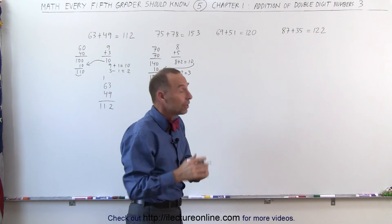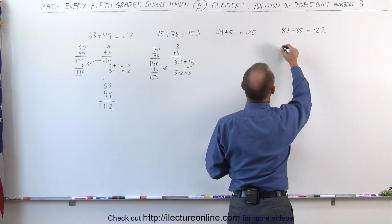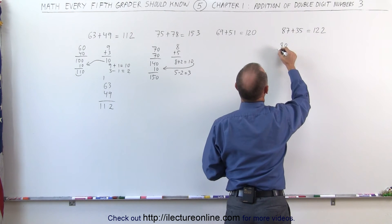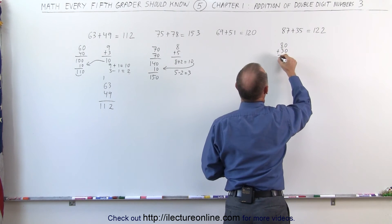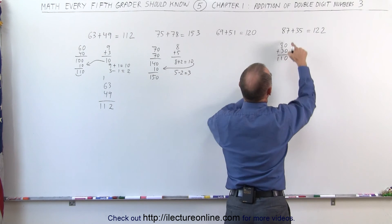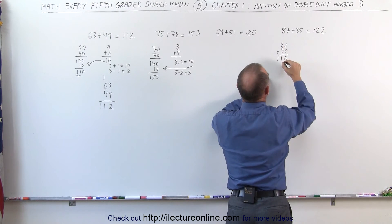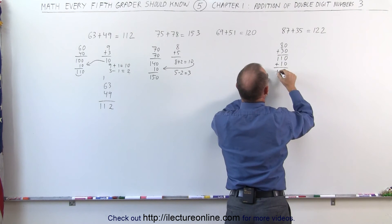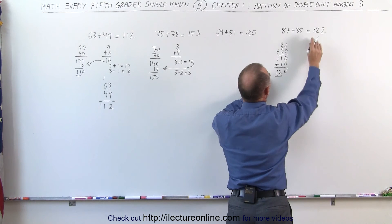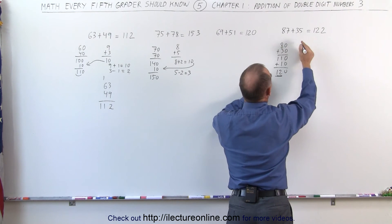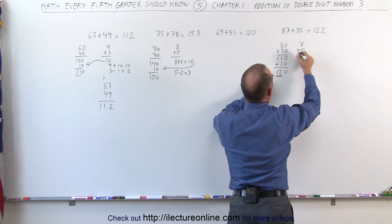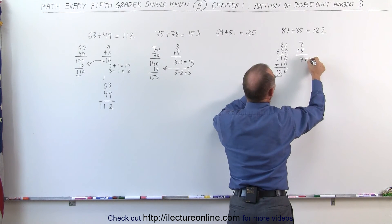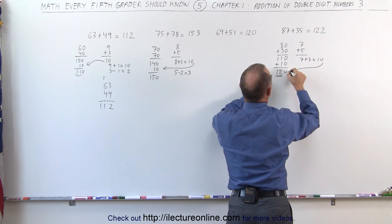Again, to see how we did that quickly in our head, that's what we should have thought about. We said, well, 80 plus 30 gives me 110. But since 7 plus 5 is more than 10, I have to add another 10 to that. It gives me 120. I write the first two numbers down. And 7 plus 5, that is 7 plus 3, that's equal to 10. That went over here.